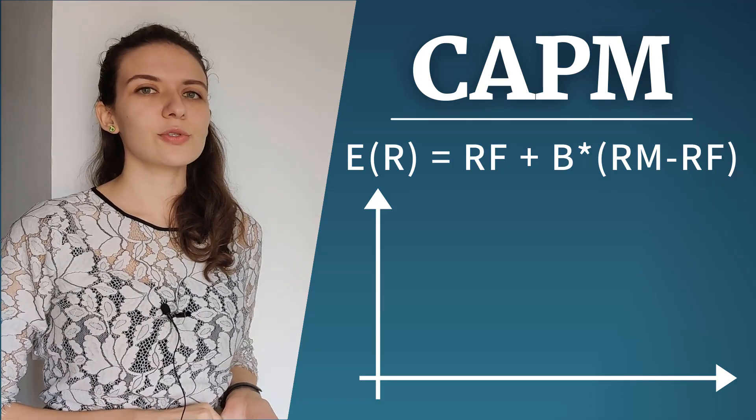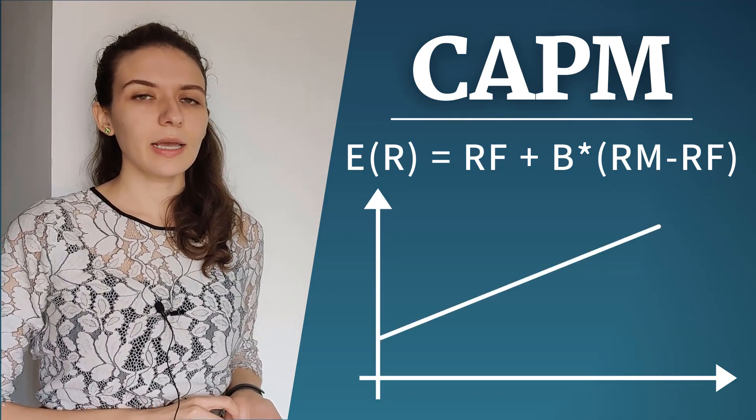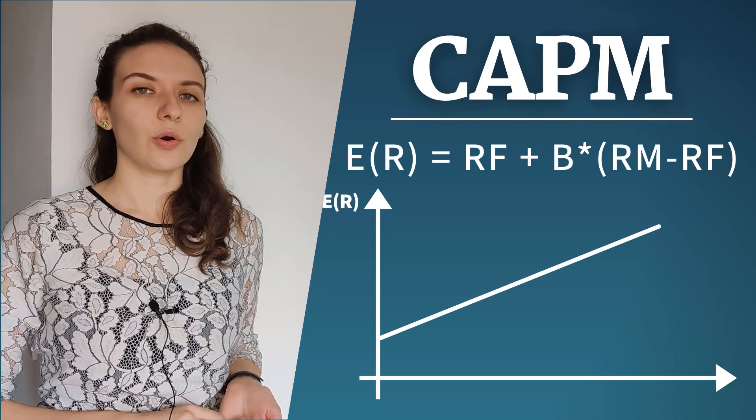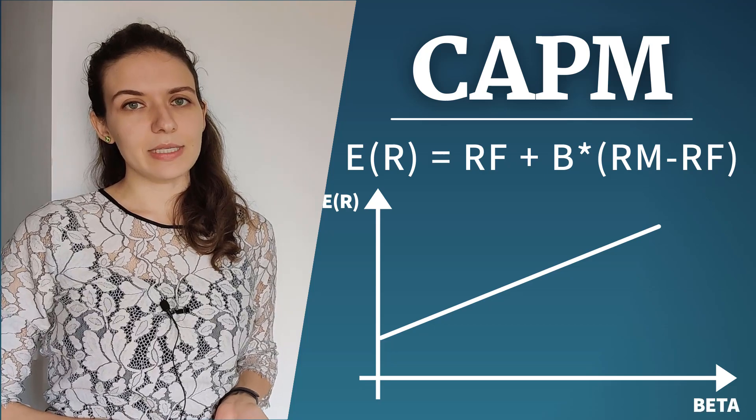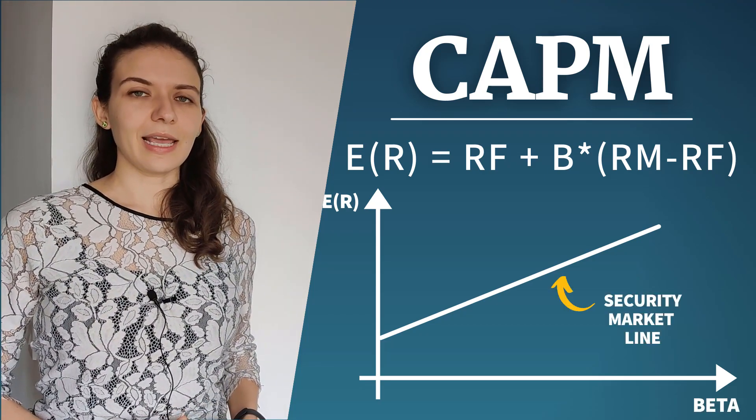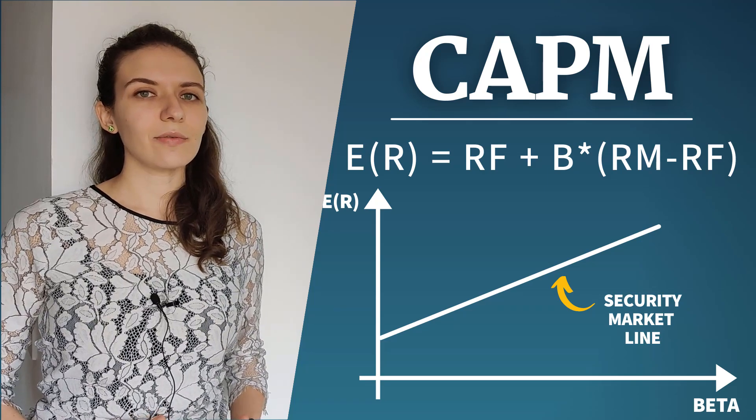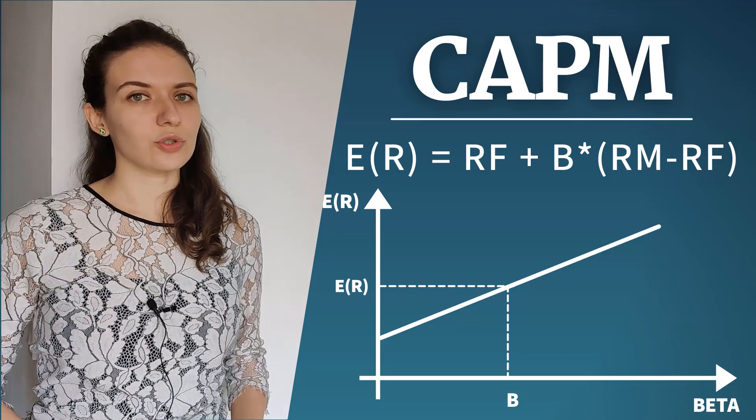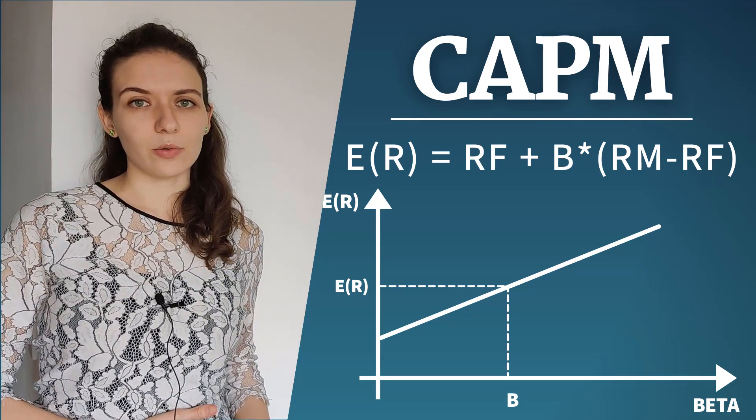The CAPM formula can also be drawn as a line in a space where we put the expected return on the vertical axis and the beta on the horizontal axis. We call this the security market line and it tells me for any level of beta what the fair value expected return on any stock should be according to the CAPM model.